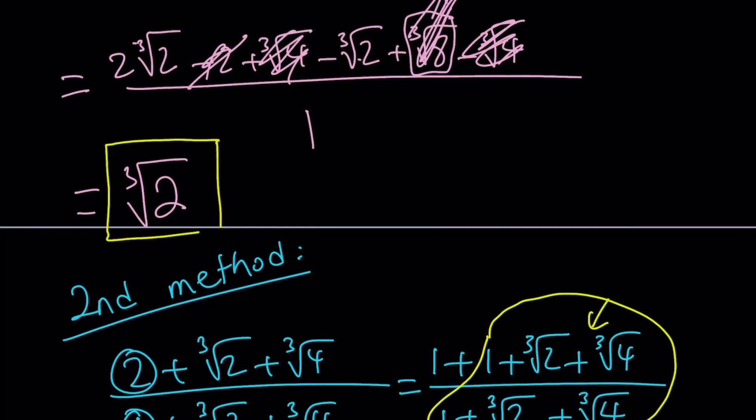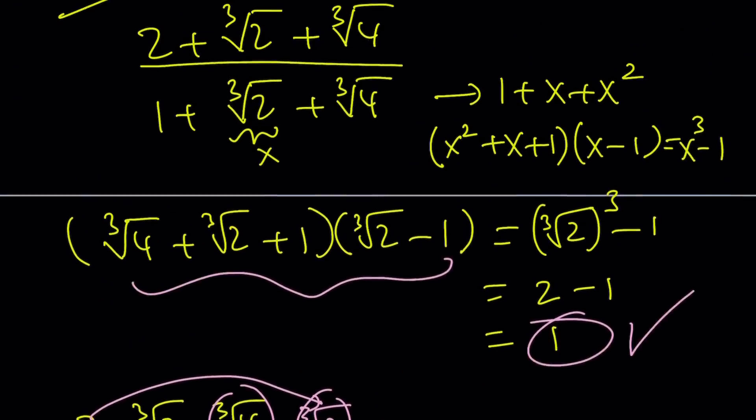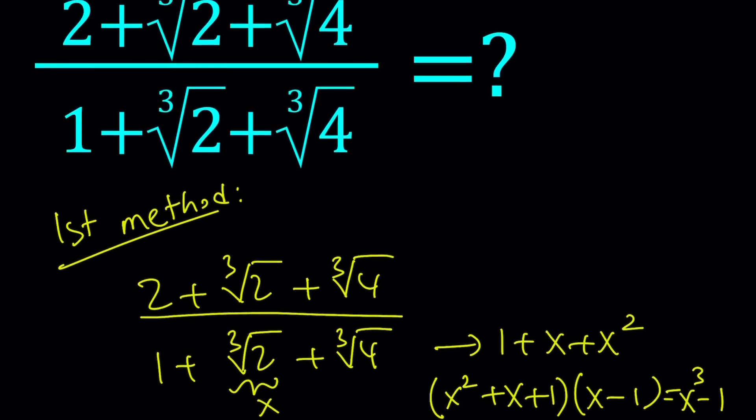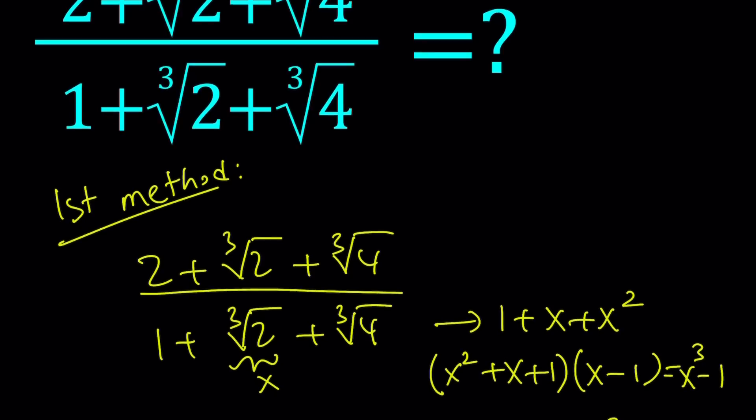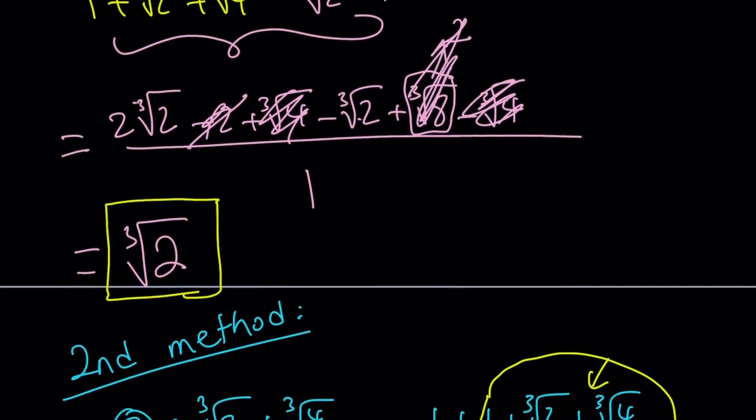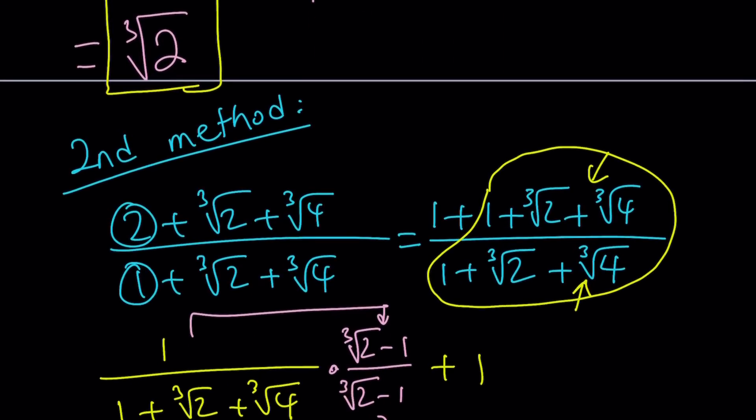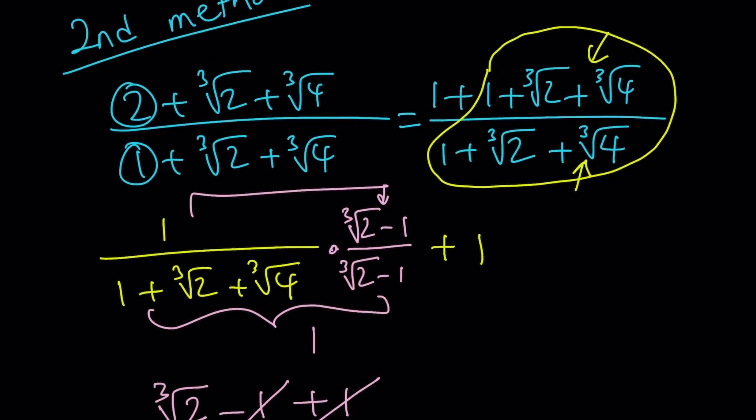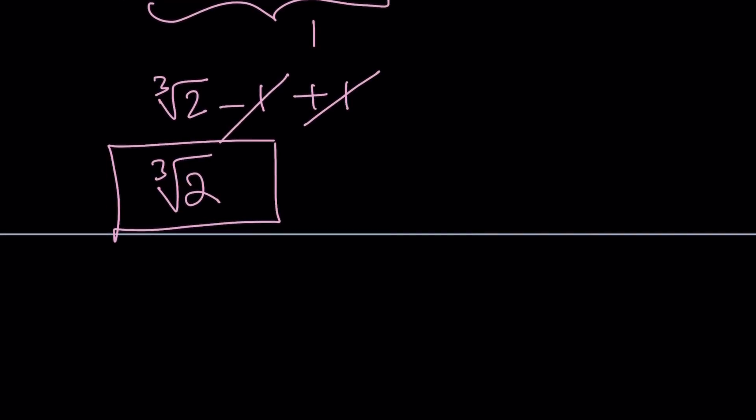So first method kind of used the idea of rationalize the denominator. I don't care if you split it up. Don't do it. Just rationalize. Because, come on, rationalizing the denominator, even though it's brute forcey, it always works. Almost always, let's say. Because if this expression is going to simplify nicely like this, then the first method obviously should be working. So we verified with two methods that we can get the same answer.